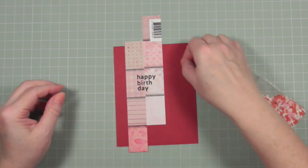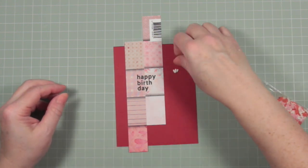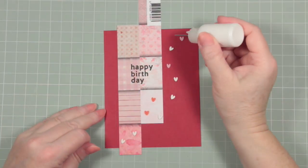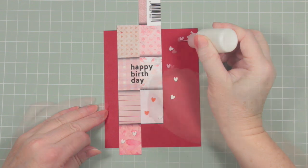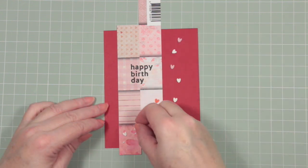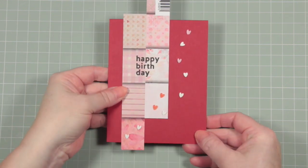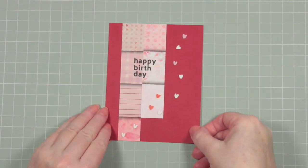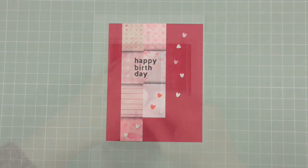To complete our card I'm going to zhuzh it up with some of the hearts. I'm going to position them on the card and then add spots of glue beside where they've been positioned, pick the little hearts up, drop them down on the glue spot and dab them into position. Finally I'm going to cut away any excess that overhangs the card. That completes our first card design.